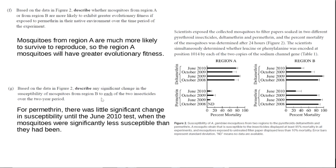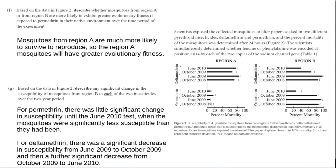For deltamethrin, we see more change happening. There was a significant decrease in susceptibility from June 2009 to October 2009 — the error bars don't overlap. Then from October 2009 to June 2010, there was another significant decrease. So we can state there was a significant decrease in susceptibility from June 2009 to October 2009, and then a further significant decrease from October 2009 to June 2010.